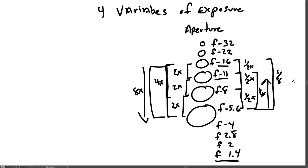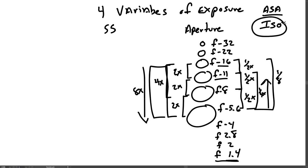The other variables that control exposure are the shutter speed and the ISO on a modern digital camera. Film cameras used to use a term called ASA, but we're going to focus on ISO with the digital cameras that we have. And then finally, the fourth variable, which is the most important, is the light itself.